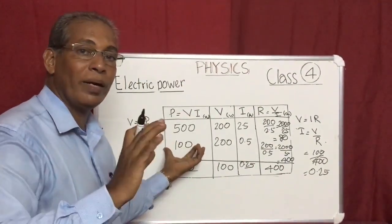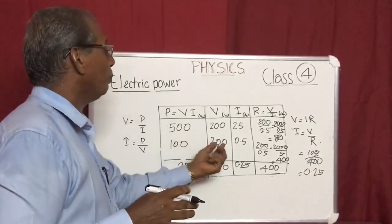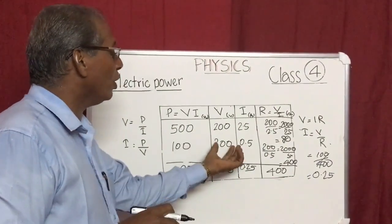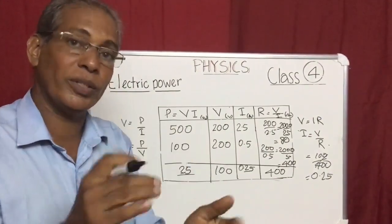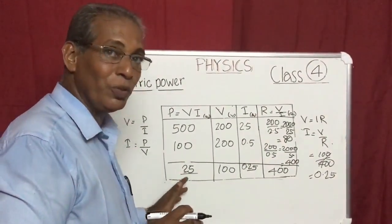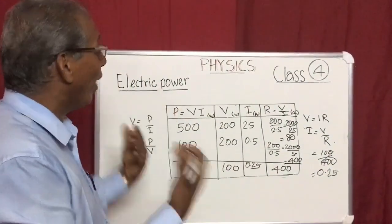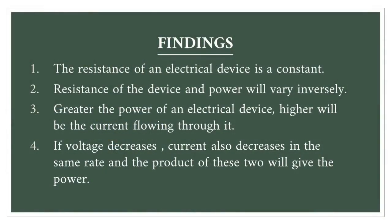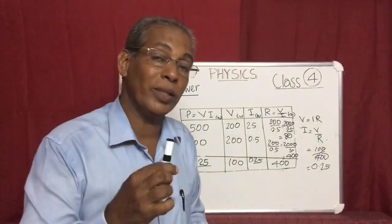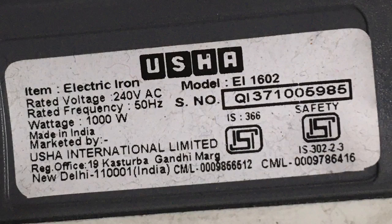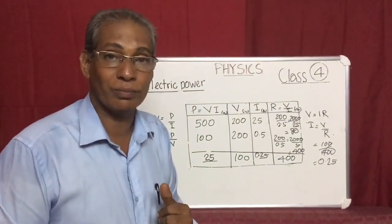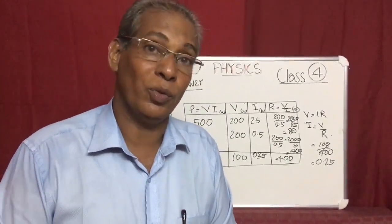So this is something we can summarize as findings from the table. Coming back to the electric iron — we can consider this as an assignment: calculate the current flowing through the electric iron and its resistance. I hope all the questions you can answer. Have a nice time — we will meet in the coming video.